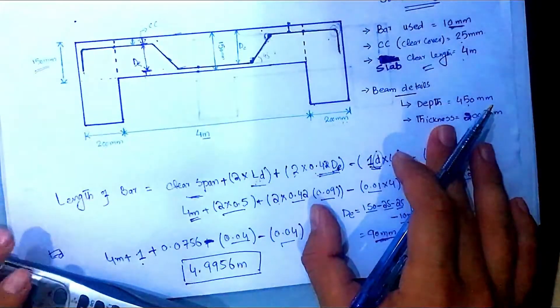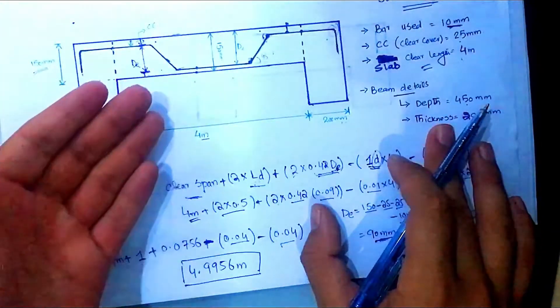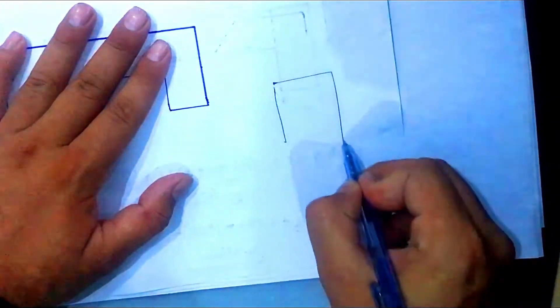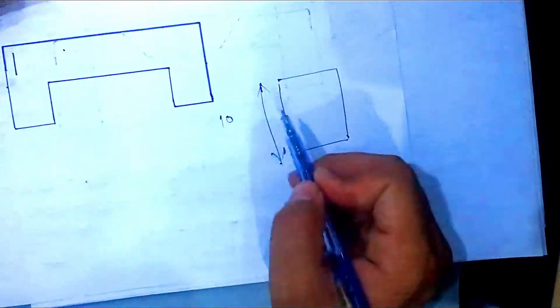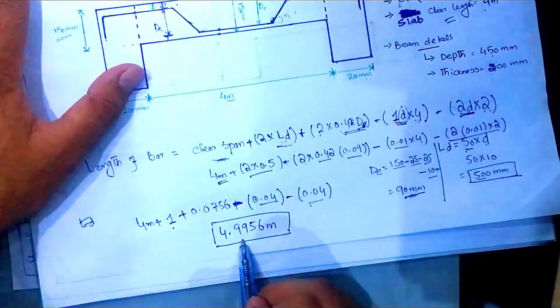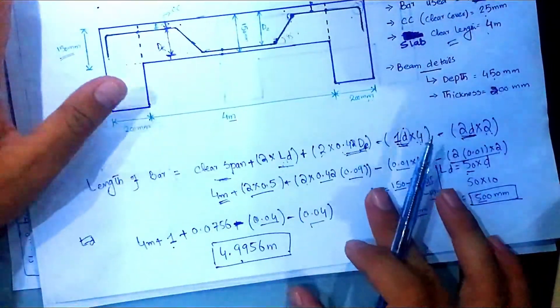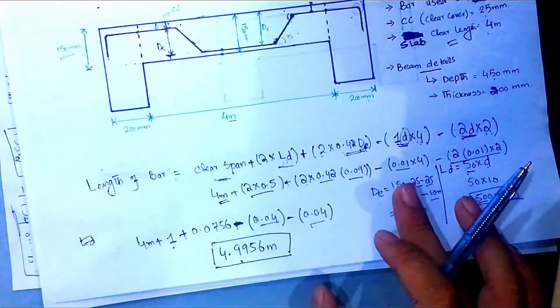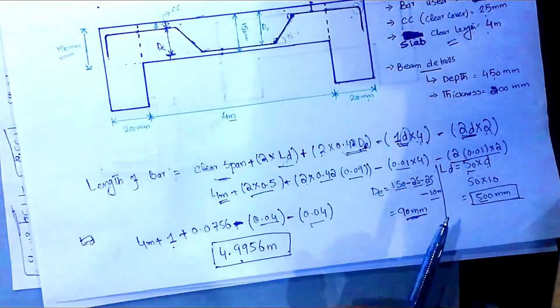This is a simple but important concept. Once you know this, you can easily calculate the number of bars — for example, for a 10-meter slab, find the number of bars and multiply by this length to get the total length. Please subscribe to the channel to get all upcoming videos on bar bending schedule. The next video will cover the bar bending schedule of a one-way slab.